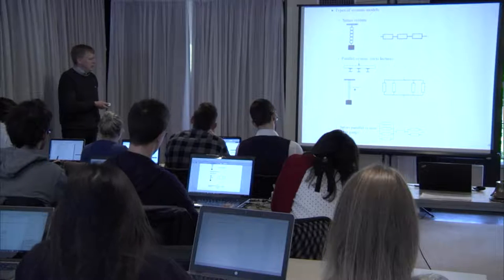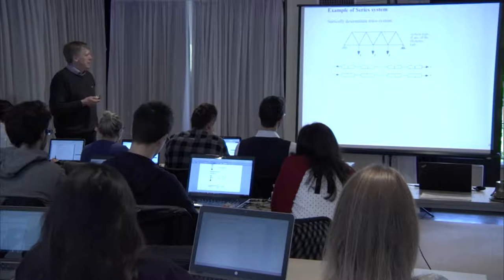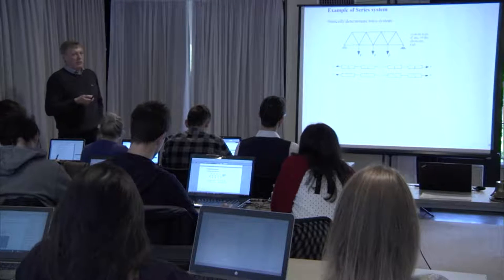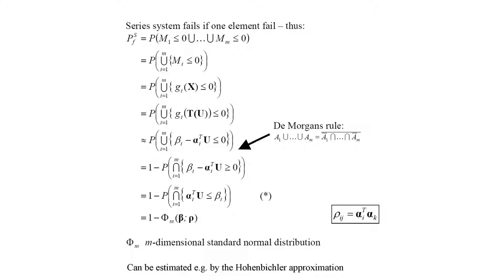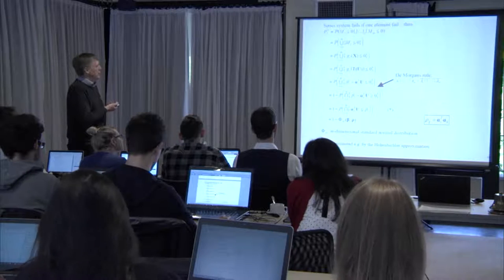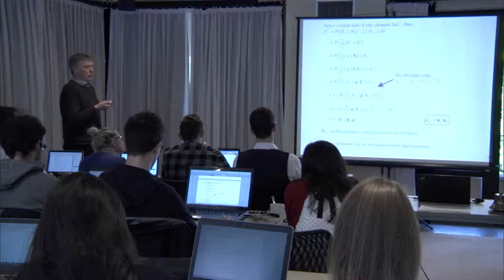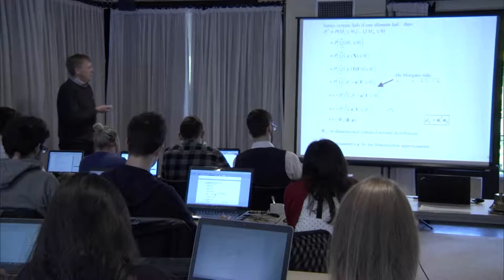To estimate the probability of failure for a series system, failure occurs if any one component fails — that is, the union of all component failure events. The limit state equation for each failure mode is introduced. Using the first-order reliability method with a transformation to the standard normal U-space via the Rosenblatt transformation, we can linearize and formulate limit state equations in that space.